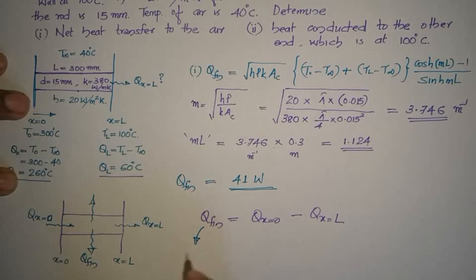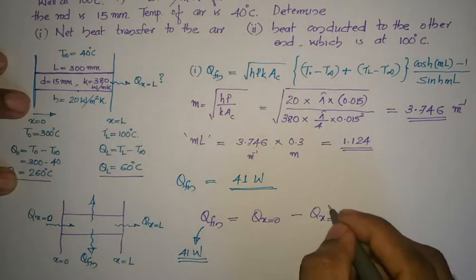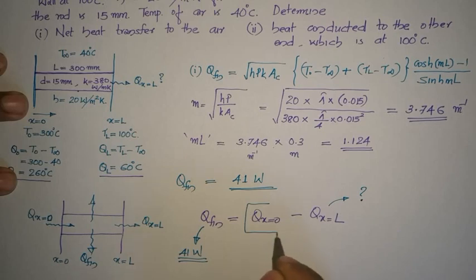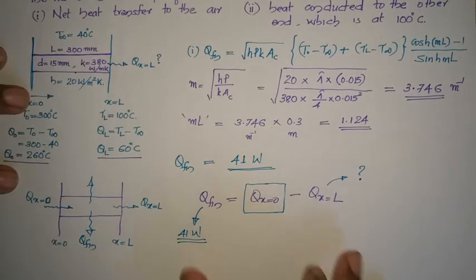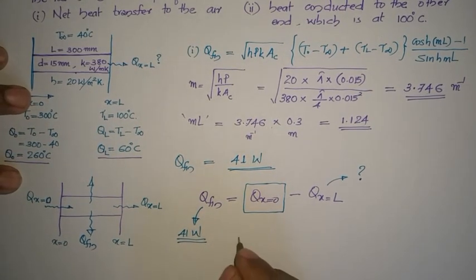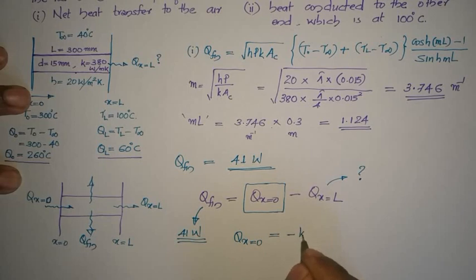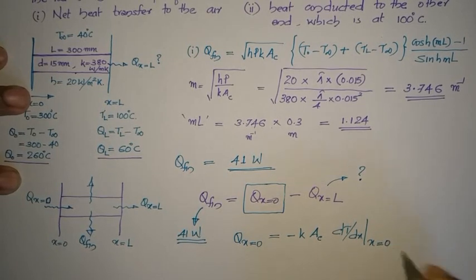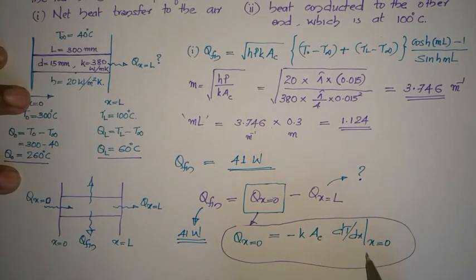Q_fin = 41 W (first part). For the second part, Q at x = L — the heat transferred to the 100°C surface — is found using energy balance: Q(x=L) = Q(x=0) − Q_fin. Q at x=0 is evaluated using Fourier's conduction law: Q(x=0) = −K × A_c × (dT/dx) at x=0.